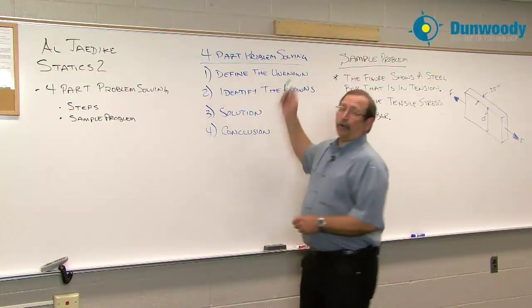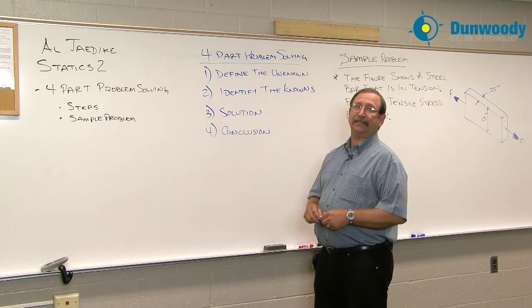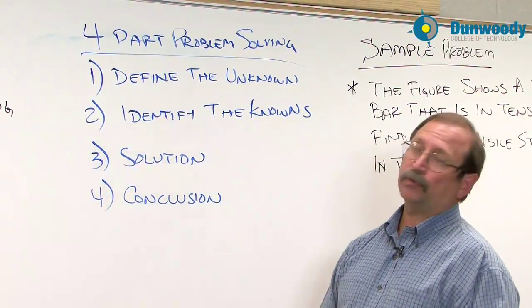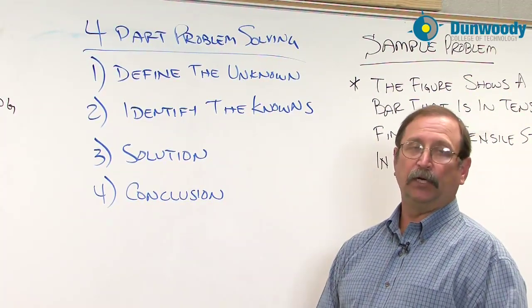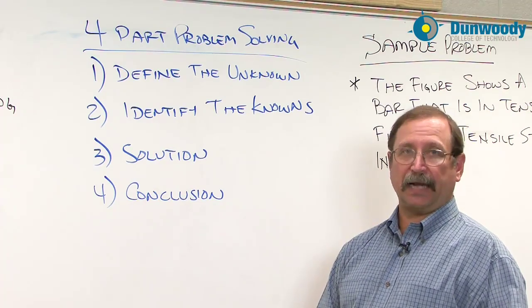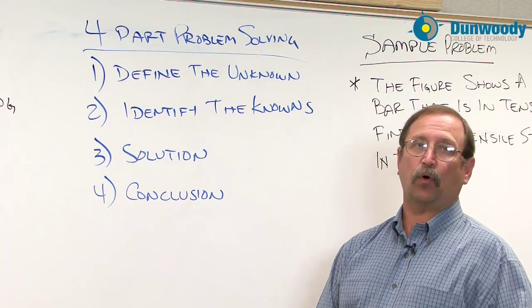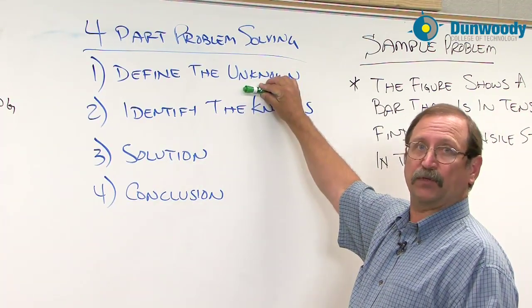First off, the four-part problem-solving is right here. The steps are very easy and we can even trim them down to shorter names. In the first step, what we want to do is define the unknown. Why are we doing this problem? Problem-solving is supposed to have an outcome. As we move through the steps, that's what we're working toward. Once we know the unknown, the purpose of the problem-solving, we go into identifying the knowns.